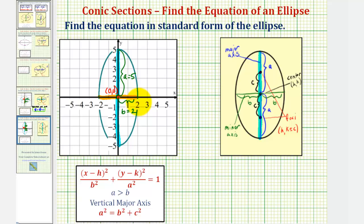The standard form of an equation of an ellipse with a vertical major axis is given here below, where again the center is H comma K, and A is always greater than B. So when we have a vertical major axis, A squared, the larger denominator, is under the Y part of the equation.